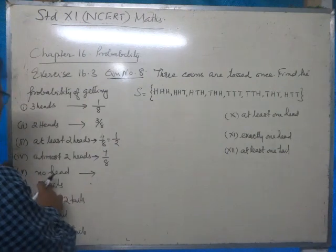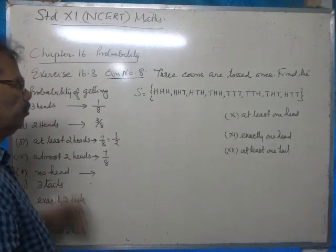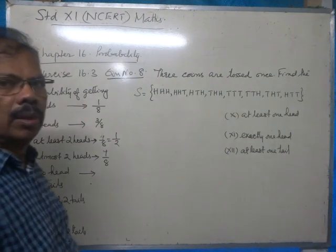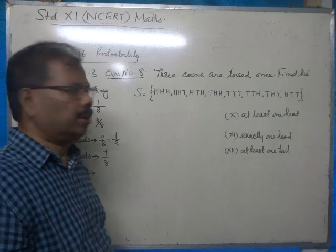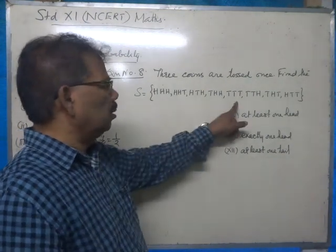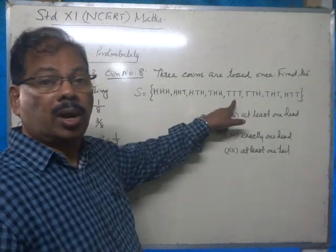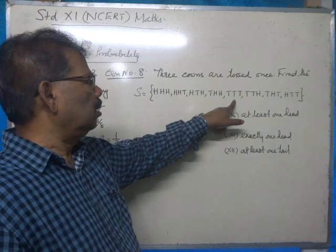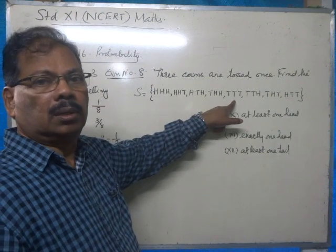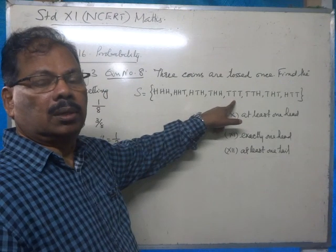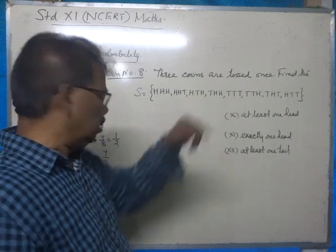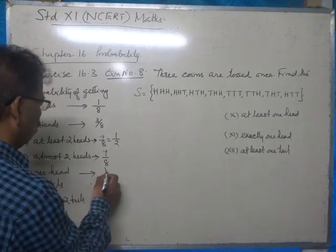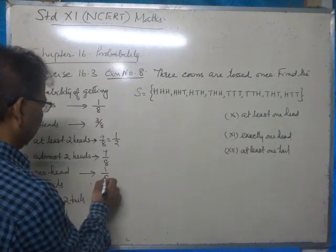Part five asks for the probability of getting no head. There is only one element in which all three coins show tails: T, T, T. Therefore the answer is one by eight.